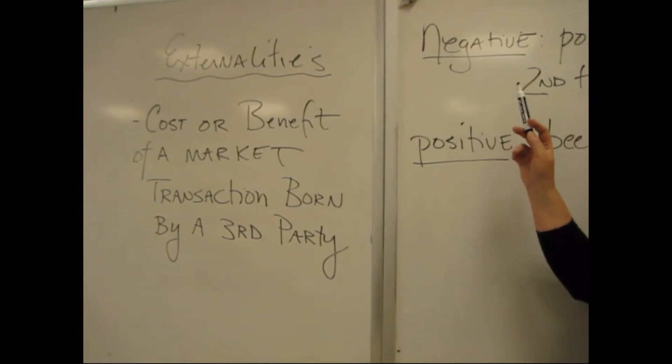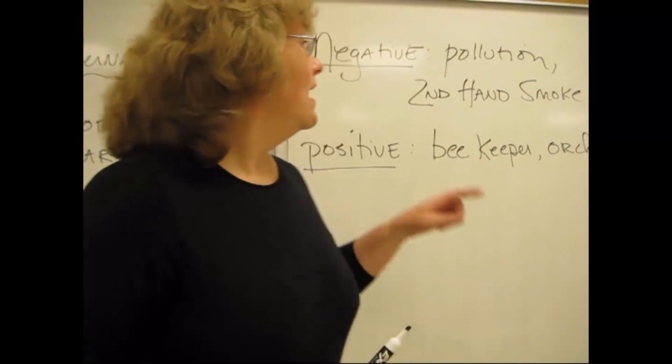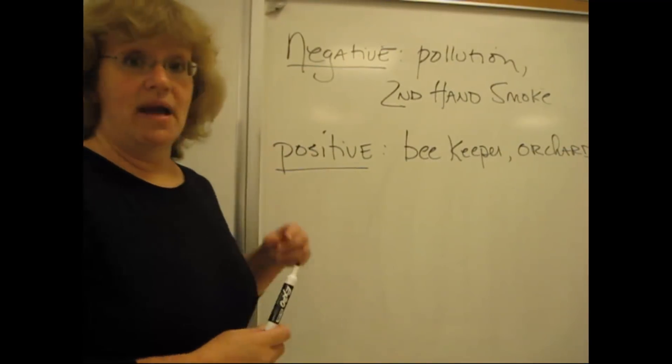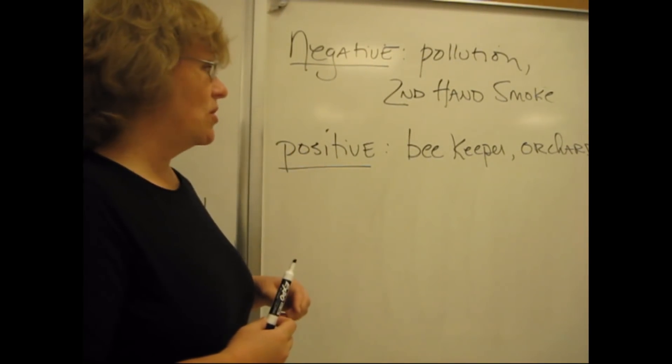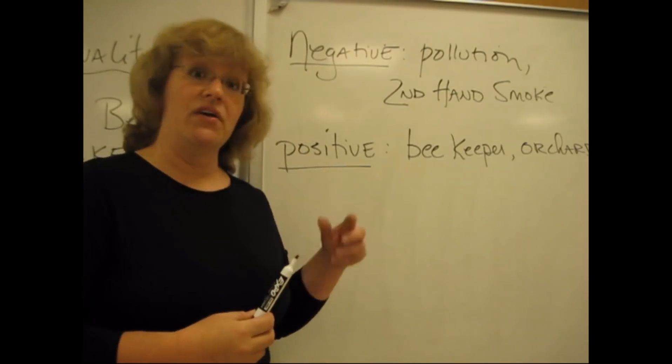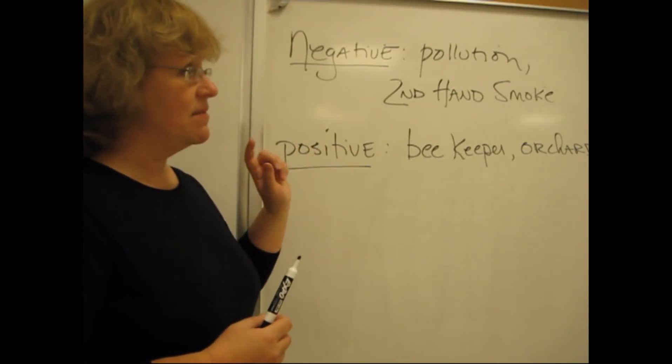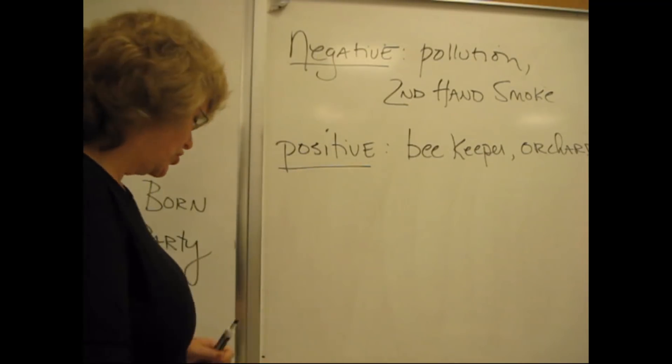Externalities can be either negative or positive. A negative externality example that we'll talk about mostly here is something like pollution or maybe secondhand smoke. A positive externality, an example we'll also talk about in a moment, might be something like a beekeeper next to an orchard.